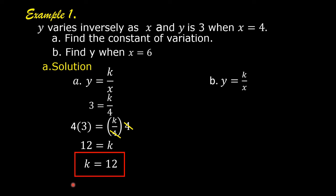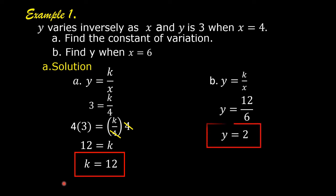Letter B: find y when x is equal to 6. Write the formula again, y is equal to k over x. Substitute 12 for k and 6 for x, then solve for y. So y is equal to 12 over 6. And 12 divided by 6 is 2. So y is equal to 2.